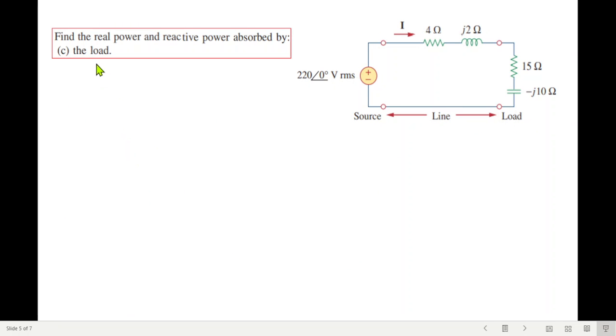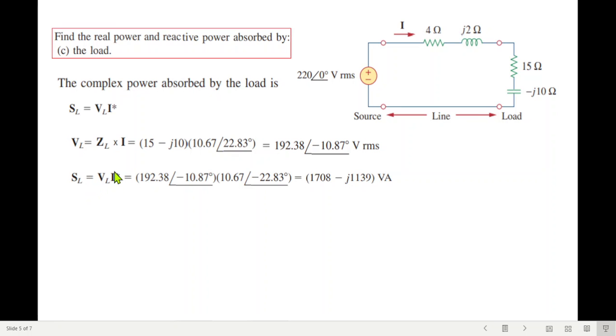And the third part is for the load. Same technique. We need to calculate V load. V load is Z load into I. This is Z into I. This is V load. Now S L is V L I conjugate. Same technique. V L. And I conjugate with the negative sign. And now this is VA. So this is the real part. And this is the reactive part. So 1708 watt. And this is 1139 VAR. So this is the first question.